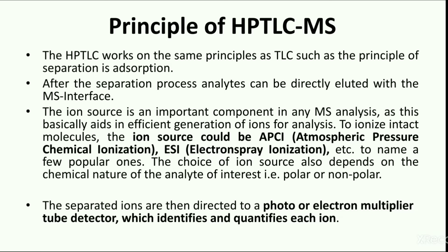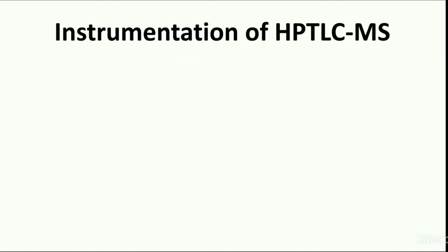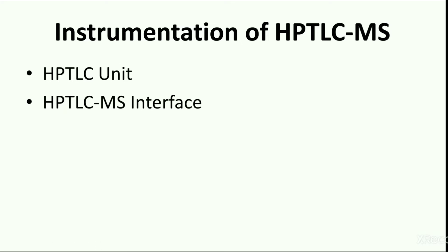In the mass spectrometer, separation is based on the mass-to-charge ratio of ions. The HPTLC-mass instrument is composed of three units: first, the HPTLC unit; second, the HPTLC-mass interface; and third, the mass unit — all connected to each other.